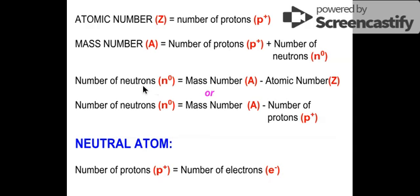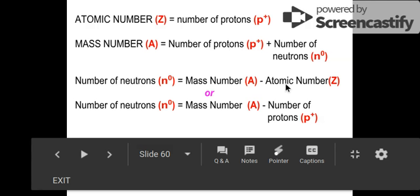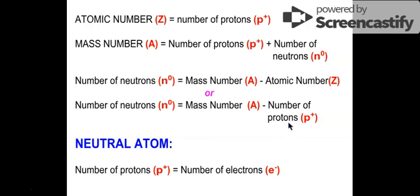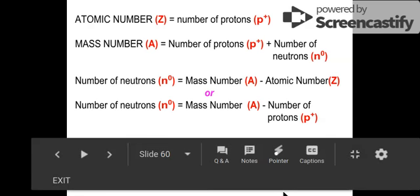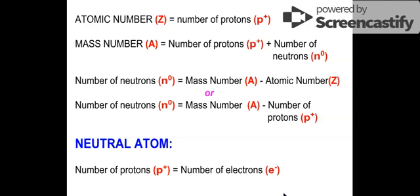Next is: how do we get the number of neutrons? We know that we can get the number of neutrons by subtracting the mass number minus the atomic number Z. So A minus Z gives you the number of neutrons — or mass number minus the number of protons, because the number of protons is just equal to the atomic number. And always remember that for a neutral atom, the number of protons is always equal to the number of electrons, so the positive balances out the negative.